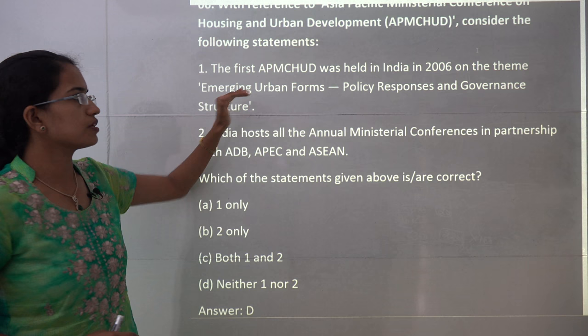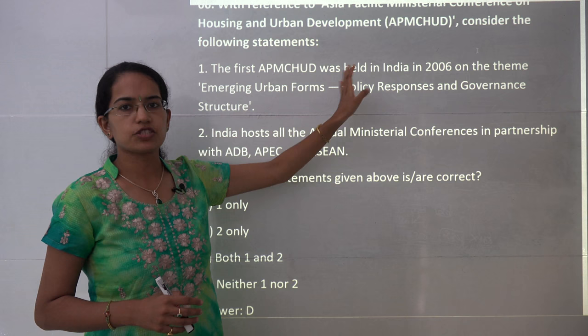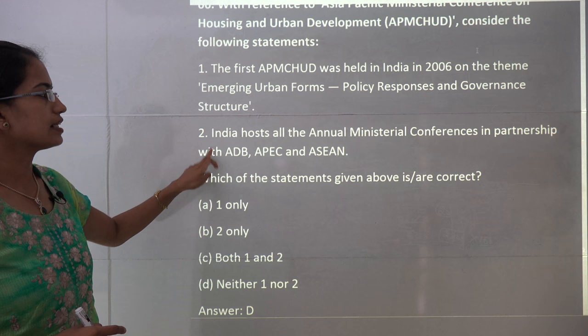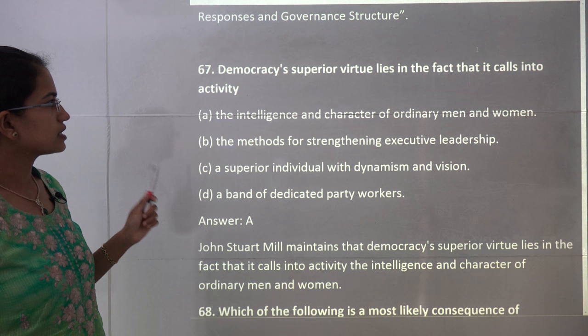The next question is about the emerging urban forms policy summit. The conference on emerging urban forms, policy responses, and governance structures was the 6th Housing and Urban Development summit, held in New Delhi in 2016, not organized as stated. India does not host all annual ministerial conferences of this body. Both statements 1 and 2 are incorrect, so D is the correct answer.